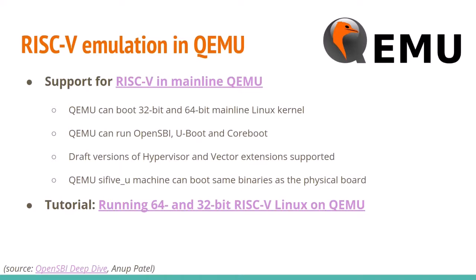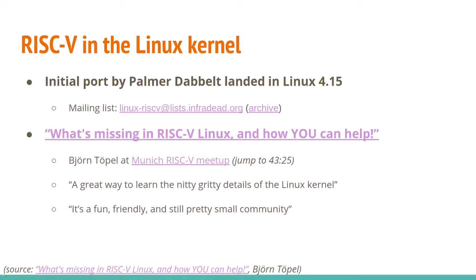RISC-V also has full emulation in QEMU, in mainline, and it can boot both 64-bit and 32-bit Linux kernels. QEMU can run OpenSBI, U-Boot, and CoreBoot on RISC-V. It also supports draft versions of the hypervisor and vector extensions. QEMU's SiFive machine can boot the same binaries as the physical HiFive board. There's a tutorial available for running both 64-bit and 32-bit RISC-V Linux environments under QEMU. The Linux kernel was ported to RISC-V by Palmer, landing in 4.15, with development on the RISC-V mailing list.